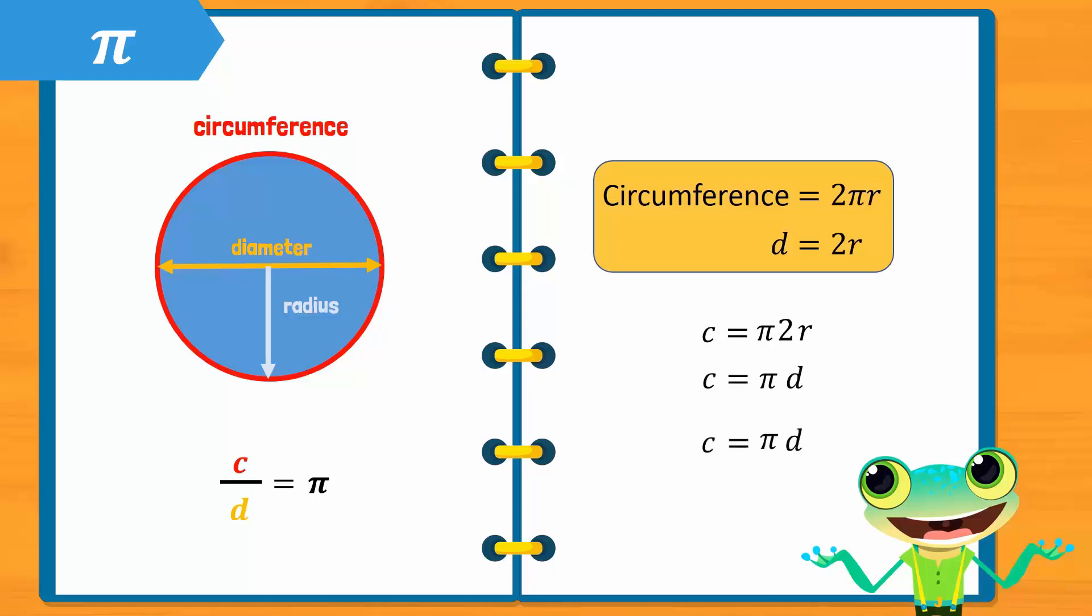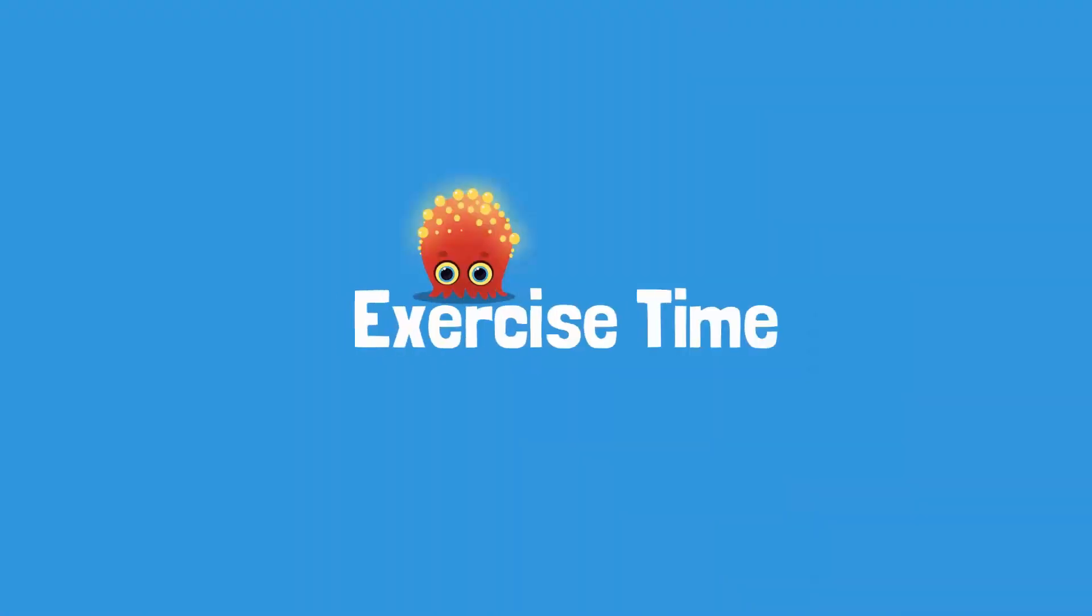Now if we take d to the other side and divide, we get C over d is equal to π. This confirms what we have learned today with knowledge that we already had. Time for an exercise.